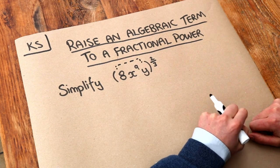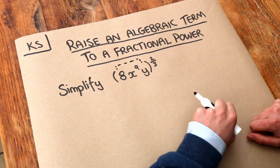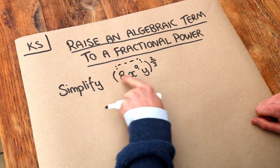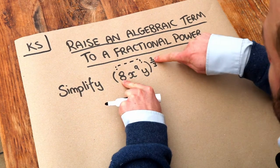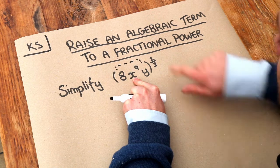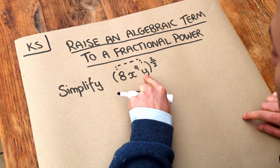Now in a previous video we saw that when we have a term to a power we just raise each of the things in that term, each of the parts of it, to that fractional power. So we want to do the 8 to the power of two-thirds, the x to the 9 to the two-thirds, and the y to the two-thirds.